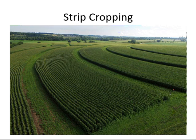Another strategy is strip cropping. We have two different types of crops — a row crop like corn, where wind can blow beneath the stalks and carry sediment away. To prevent that soil loss, adjacent to the row crop a farmer plants a cover crop: low-lying vegetation like grass or rye. This traps the sediment blown away from beneath the row crop and keeps the soil in place.